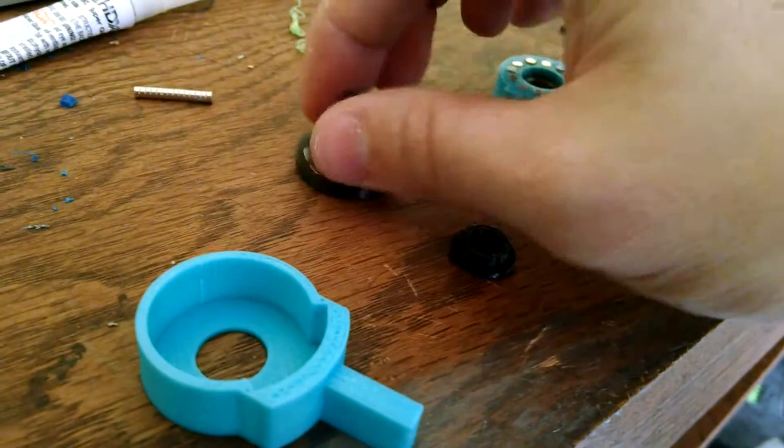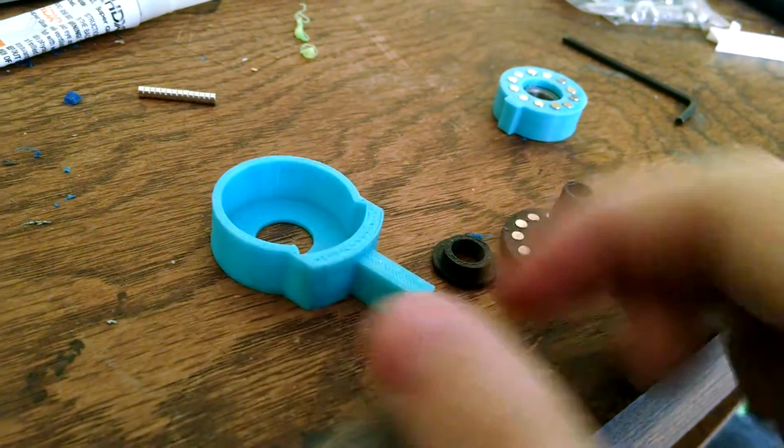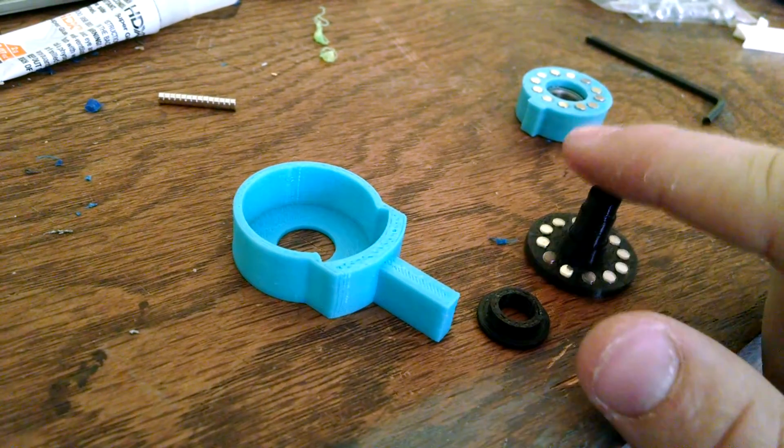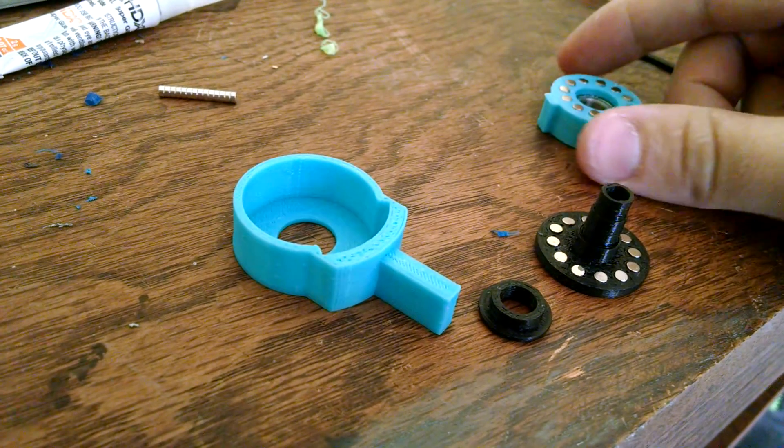I'm going to part the extruder mechanism just to show you how it goes together. So four pieces, like I said, and then plus the ones on the extruder, the slider mechanism.